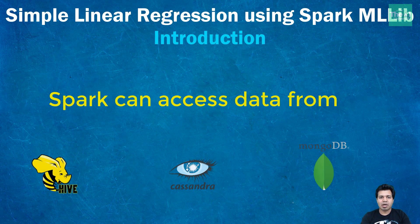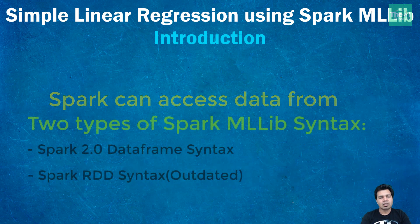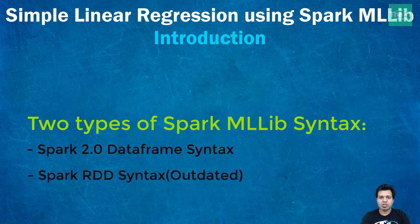There are two types of Spark MLlib syntax. Number one is the Spark 2.0 DataFrame syntax, which provides a higher-level API built on top of DataFrames so that you can construct machine learning pipelines. Number two is the Spark MLlib RDD-based syntax, which is outdated and is no longer supported or updated. The Spark 2.0 DataFrame API is the primary machine learning API for Spark currently.